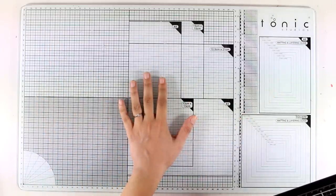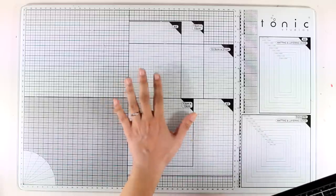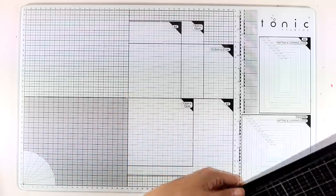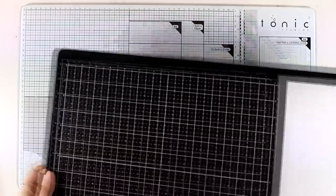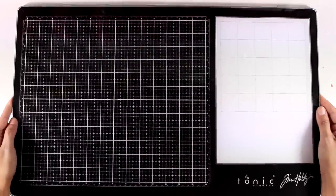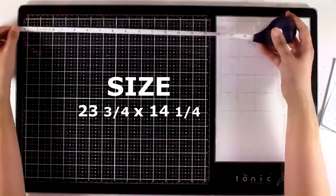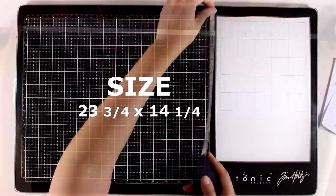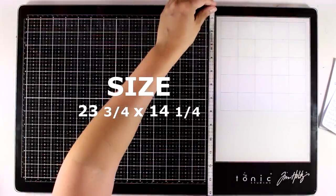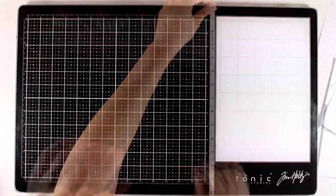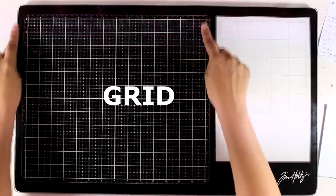If you are used to working with centimeters then probably this glass mat is perfect for you, and you will find a link down below for this glass mat as well. Now let's talk a little bit about the new design by Tim Holtz. The size is 23 inches and three quarters by 14 inches and one quarter, which is exactly the same as the previous white glass mat.